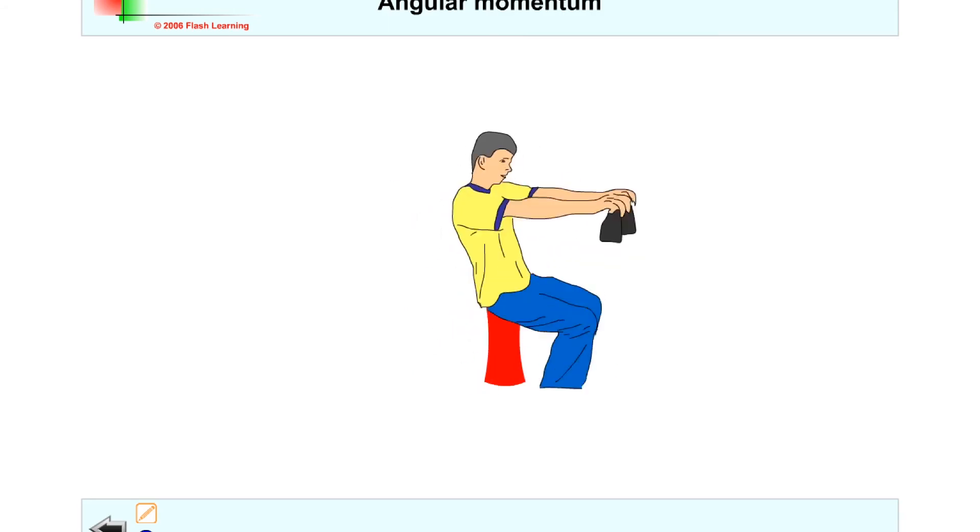So let me just show you that. If their arms are extended to begin with, they're rotating slowly, and if they bring their arms in towards their body, they start rotating faster. But why is that? Well, it's all to do with moment of inertia and conservation of angular momentum.